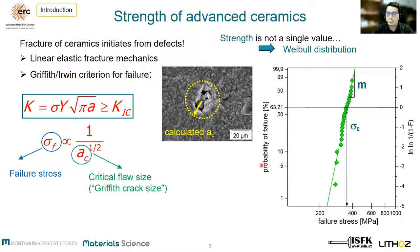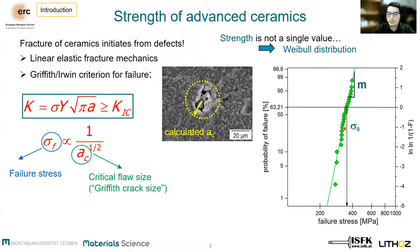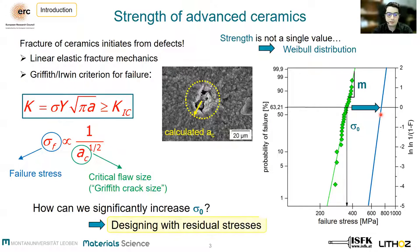The probability of failure is plotted over the failure stresses. From this strength distribution, we can basically extract two parameters: the Weibull modulus M, which is a measure of scatter — a high Weibull modulus means low scatter — and the characteristic strength sigma zero, which is defined as the failure stress where the probability of failure is approximately 63%.